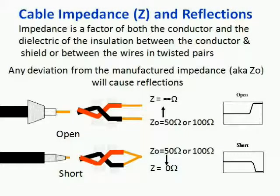Any deviation from a cable's manufactured impedance, Z0, will cause deviations in the TDR's trace.